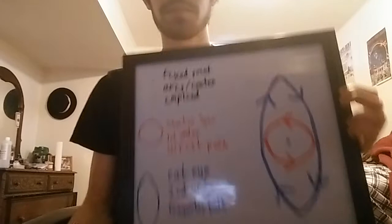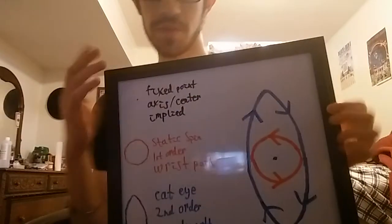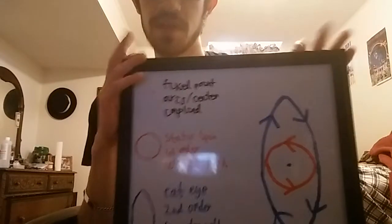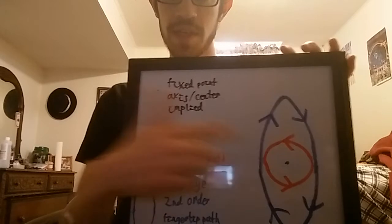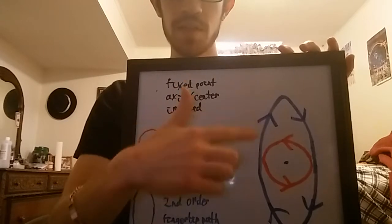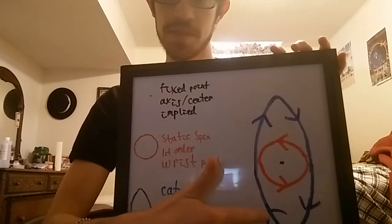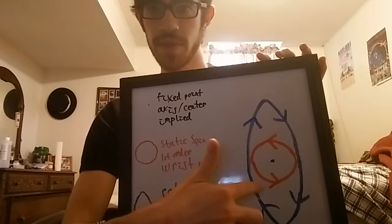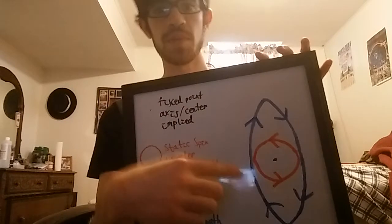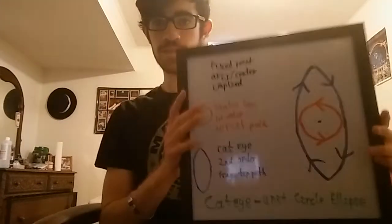It looks like this, and these arrows denote direction of spin. Notice that the cat eye itself is rotating the opposite direction of your wrist, meaning this is a unit circle anti-spin.